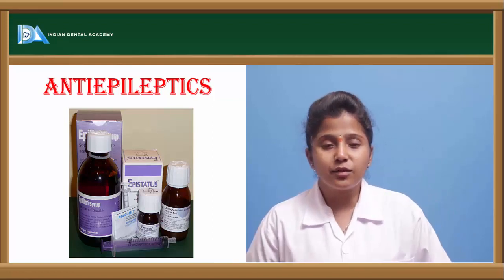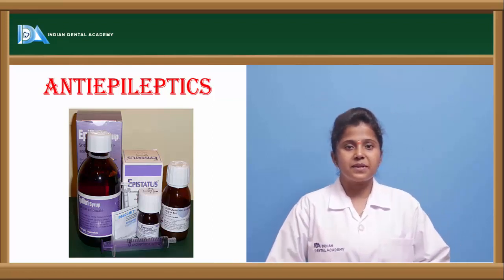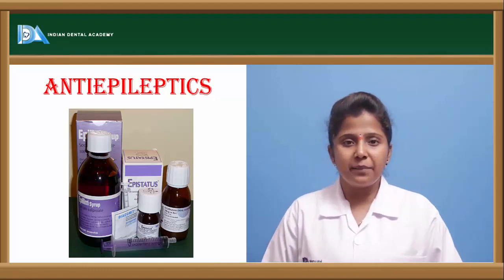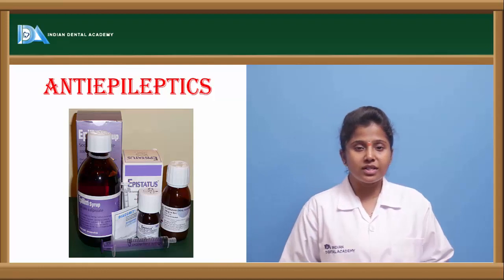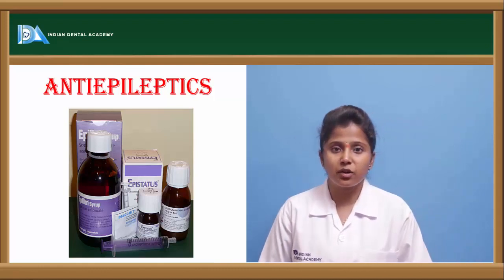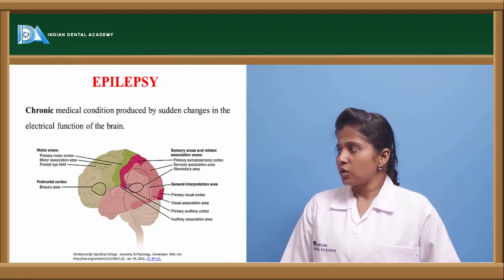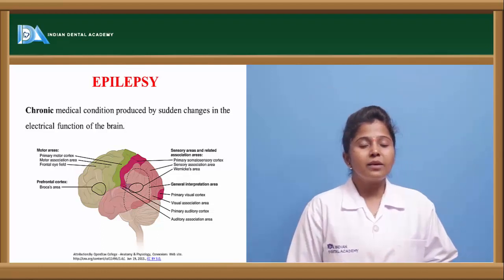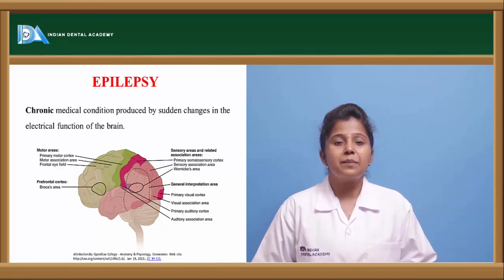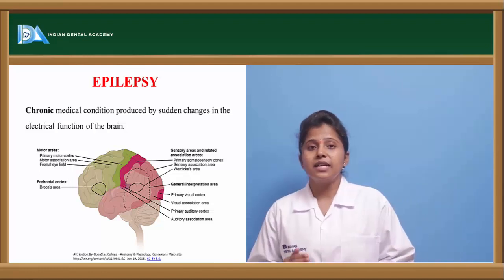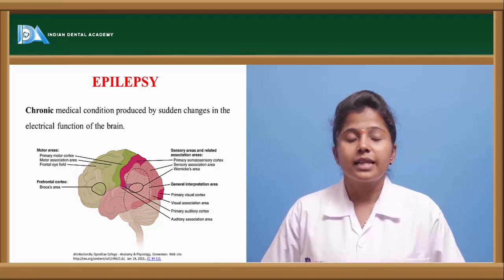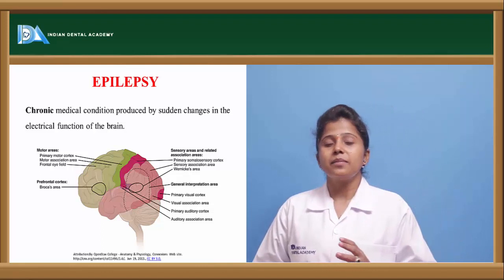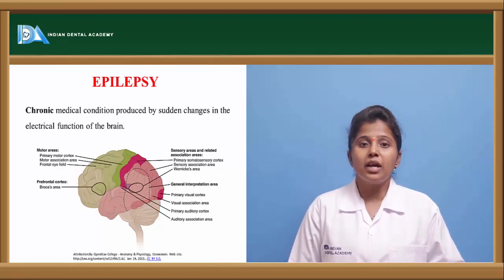Today we will discuss anti-epileptic drugs: what epilepsy is, how it is caused, and what drugs are used in its treatment. Normally the brain generates electrical impulses to monitor body activity. If the electrical activity in the brain is altered, that causes epilepsy — a chronic medical condition where the electrical activity of the brain is disturbed.